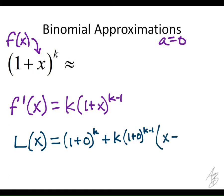Times x minus a. And a is 0, so x minus 0. So the linearization of this binomial is 1 + kx.